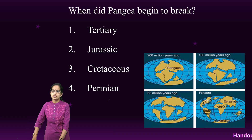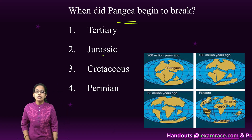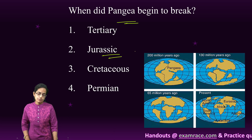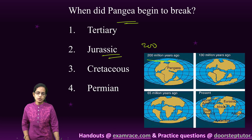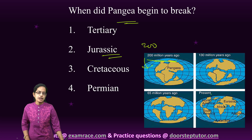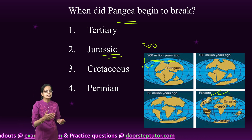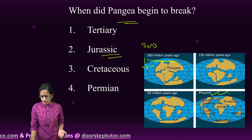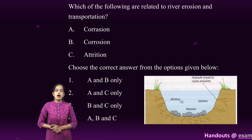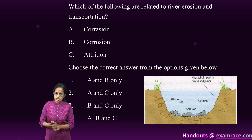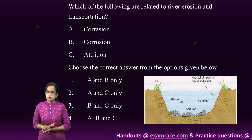Pangea started to break during the early Jurassic epoch, around 200 million years ago, as seen in this diagram, leading finally to the present-day segregation of continents. This is a very direct question from the concept of plate tectonics and continental drift theory.